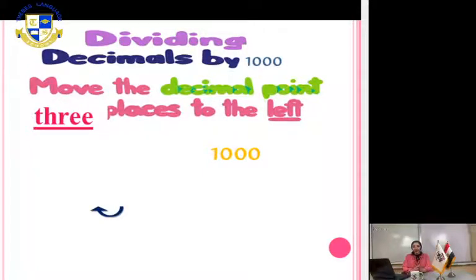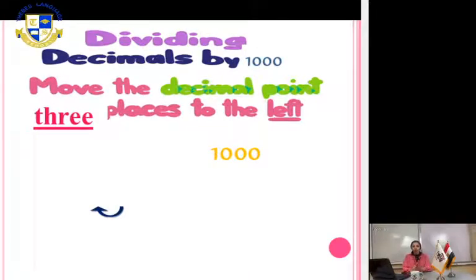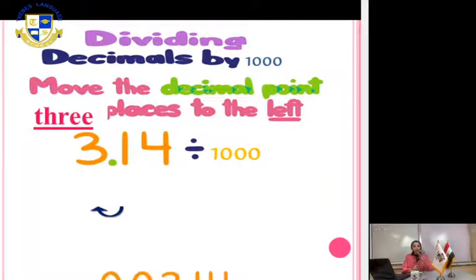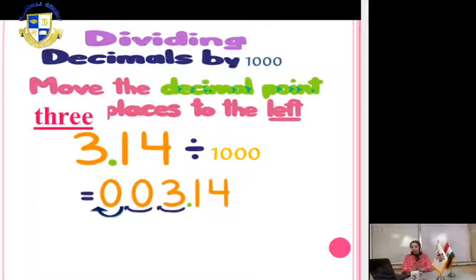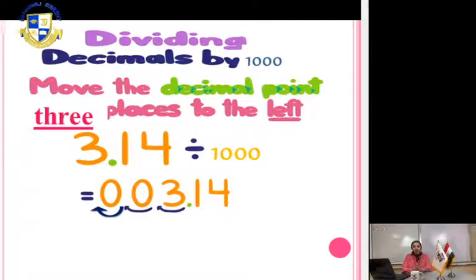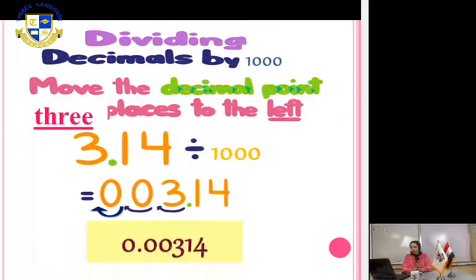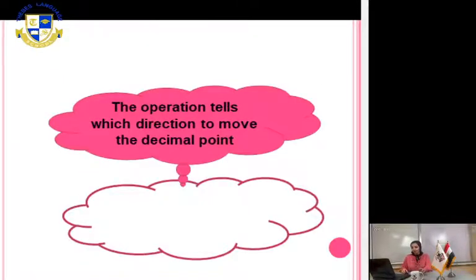Another exercise: dividing a decimal by 1000. Move the decimal point to the left according to the number of zeros. Dividing by 1000 means 3 zeros, so move the decimal point three places to the left. We have only one digit on the left, so put cover zeros. The answer will be 0.00314. So easy!